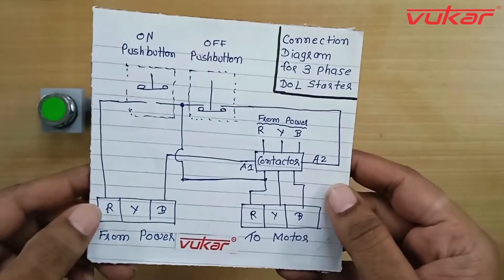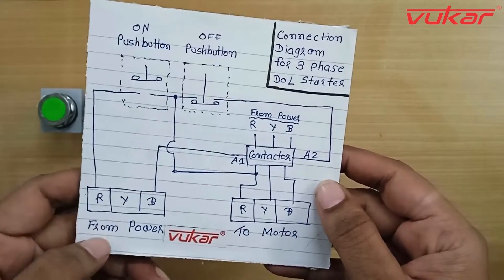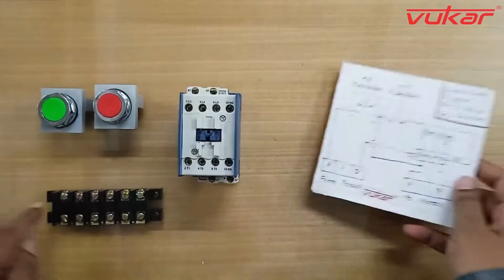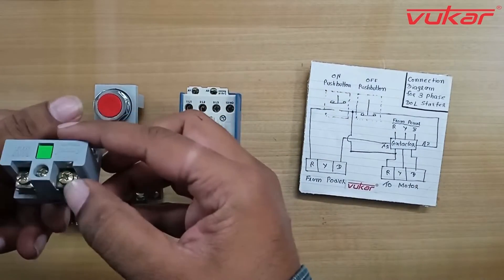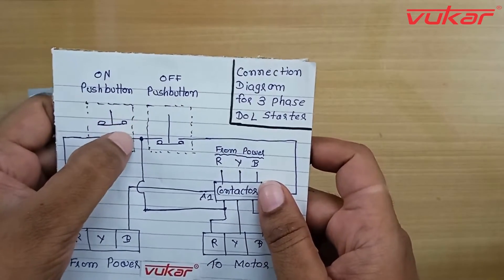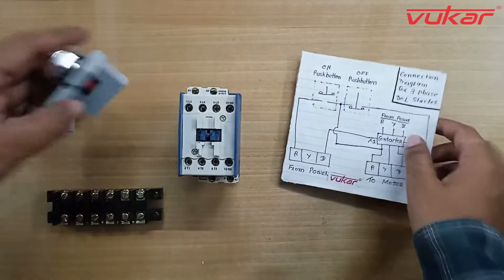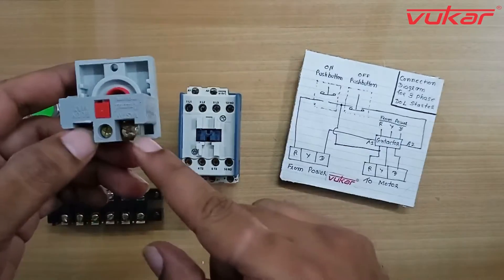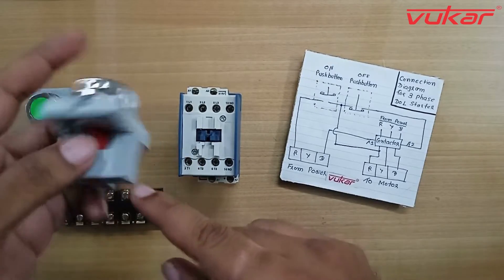Now we will see the connection of control wiring. So input R is connected with on-push button. The other point of the on-push button is connected with off-push button and other point of off-push button is directly connected with contactor coil A2 terminal.